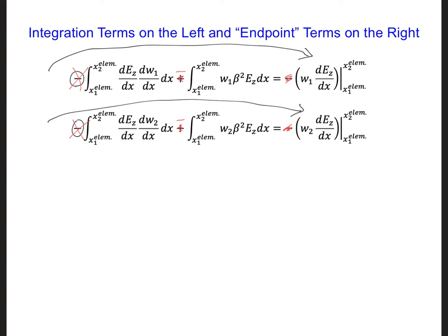Lastly, we need to figure out what to use for the weighting functions, W1 and W2, everywhere where they show up in these equations. A common approach, which is called the Galerkin approach, is to use the same functions for the weighting functions as for the interpolation functions.